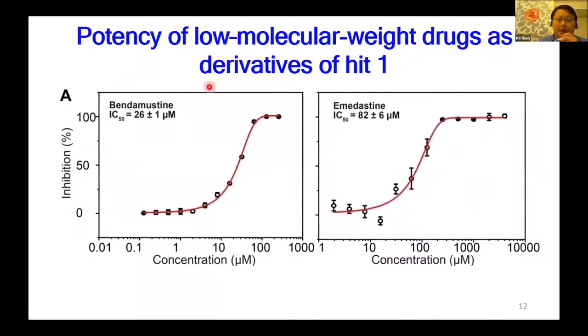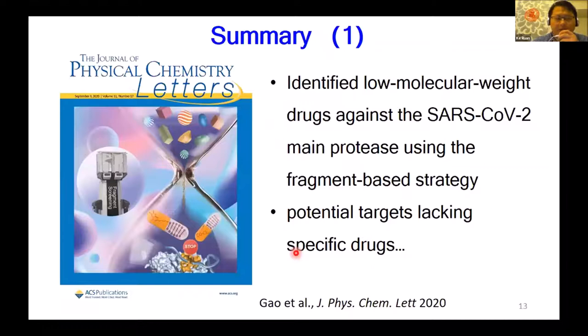But carmofur is a covalent inhibitor, so we tried to search for more inhibitors that are not covalent. We searched repurposed drugs of low molecular weight but with derivatives that keep the binding mode. We found two drugs: one is called adenomosine and another is ebastine. These two can inhibit the amide bond cleaving activity of the main protease as well. Using NMR, we can identify low molecular weight compounds against the SARS-CoV-2 main protease using this strategy, which can in principle be applied to other targets.